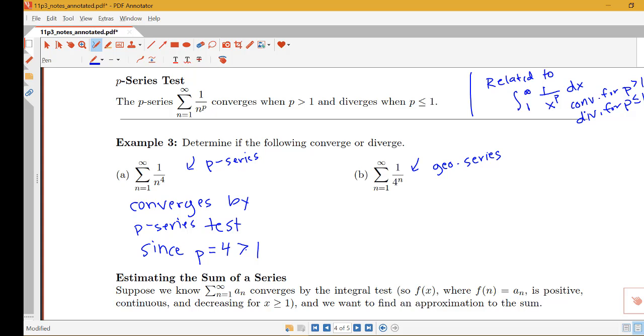So whenever we're applying a test we're going to say the name of the test, we're going to say our conclusion, and then we're going to say why the conditions of that test have been met here. So I'm calling it a p-series, I need to say what that p-value is. In this case it's 4 and I also need to show that the value that I have is bigger than 1 because our p-series test says that we're going to converge when that p-value is bigger than 1.